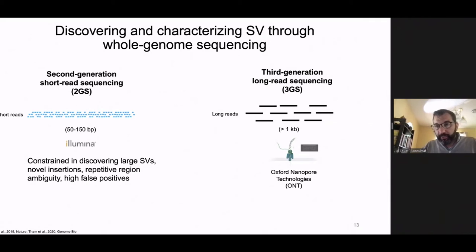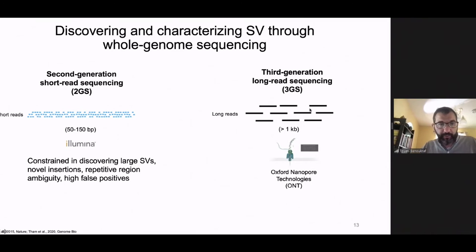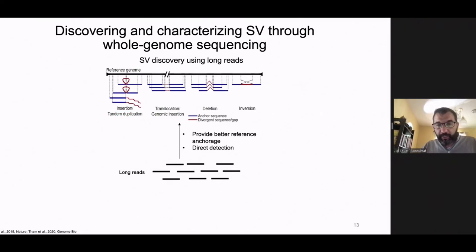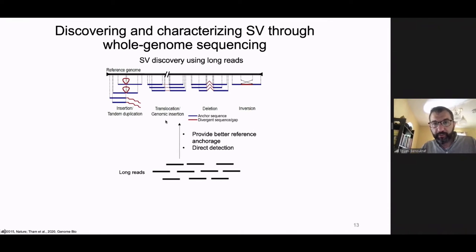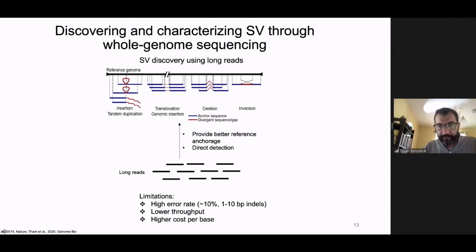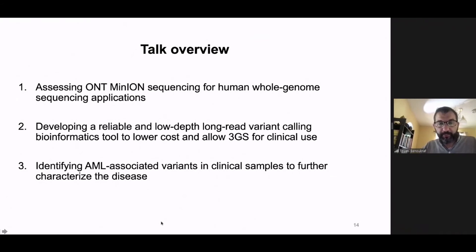We sequenced these patients with both technologies: Illumina second generation sequencing and Oxford Nanopore third generation long-read sequencing, then combined both. With long reads we wanted to find insertions, duplications, translocations, deletions, and inversions — everything larger than 50 base pairs. The known limitations are higher error rates, lower throughput, and high cost per base pair.